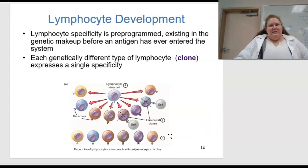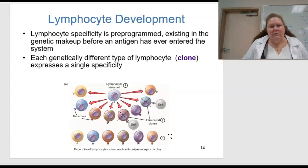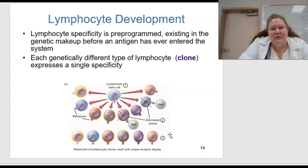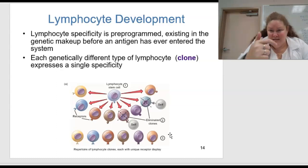What about lymphocyte development? Lymphocyte specificity is pre-programmed — it exists in the genetic makeup before an antigen has ever entered the system. Each can be genetically different for each type of lymphocyte. Each genetically different type of lymphocyte or clone expresses a single specificity.